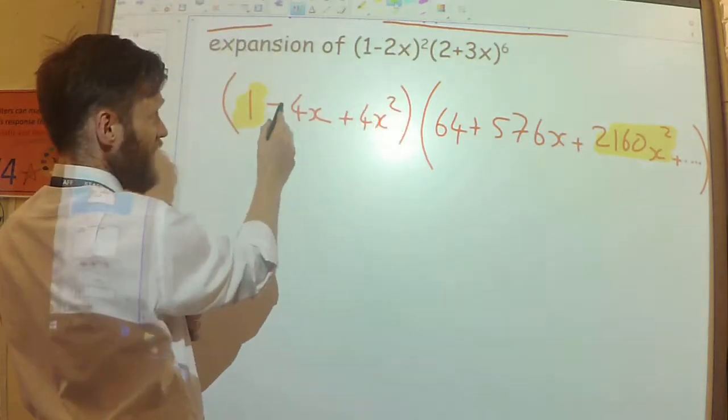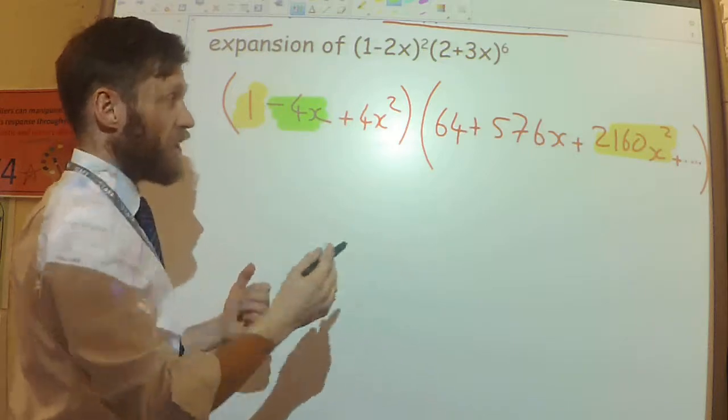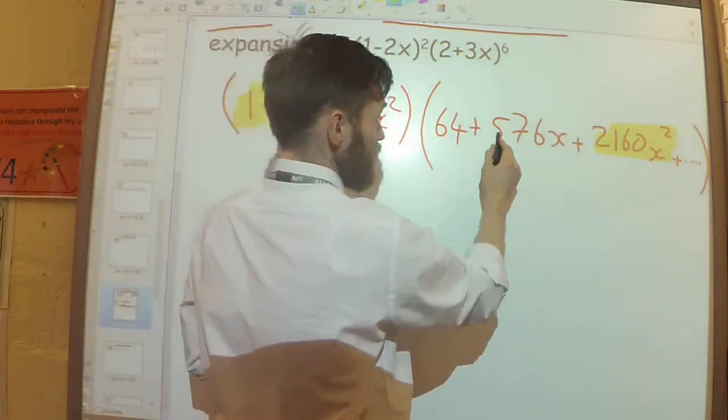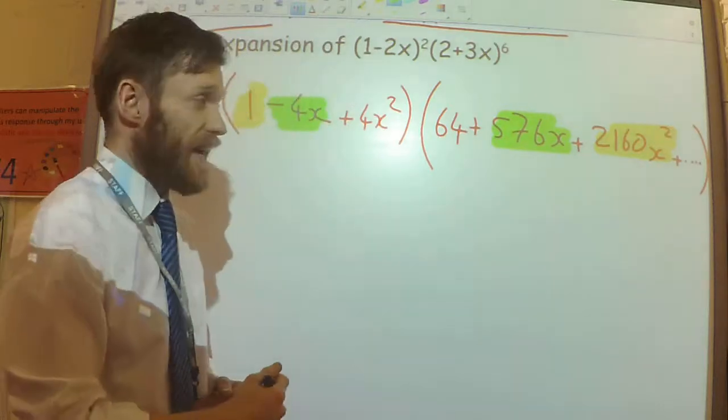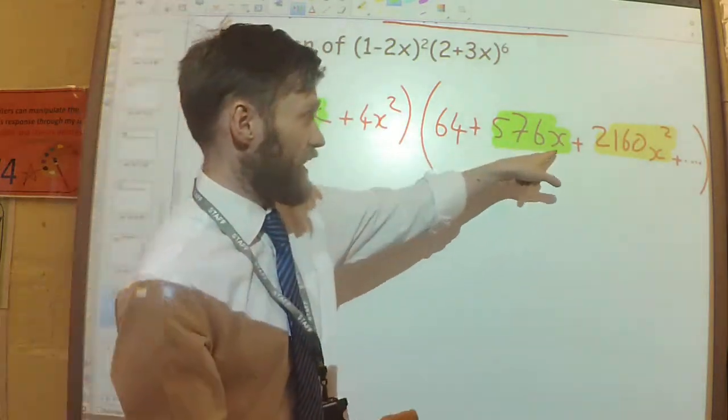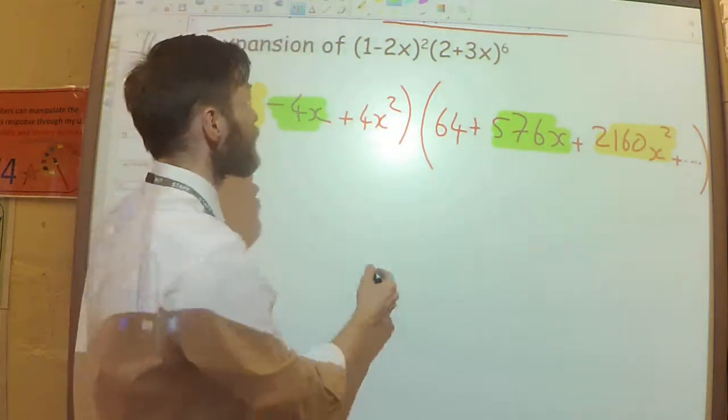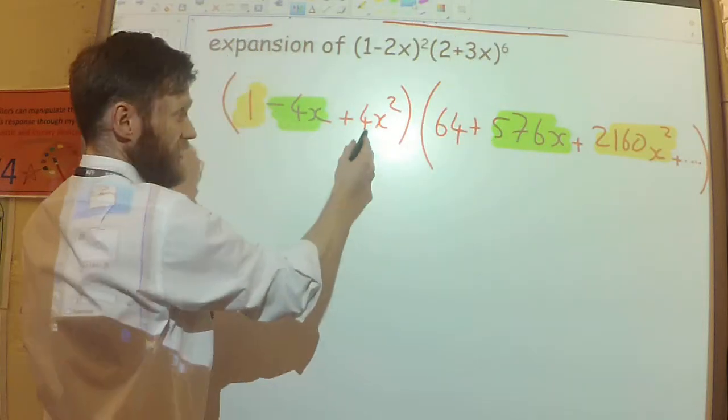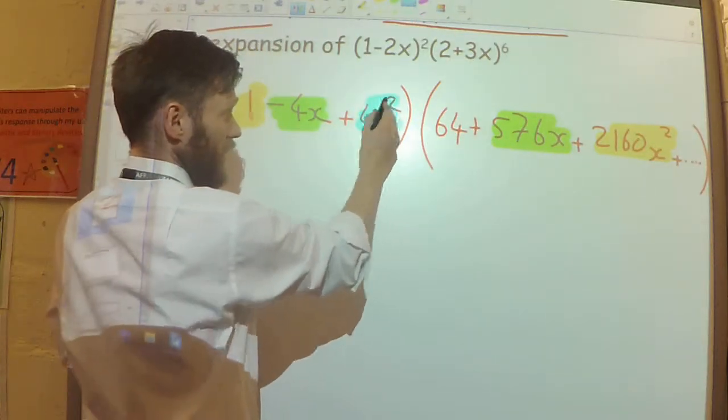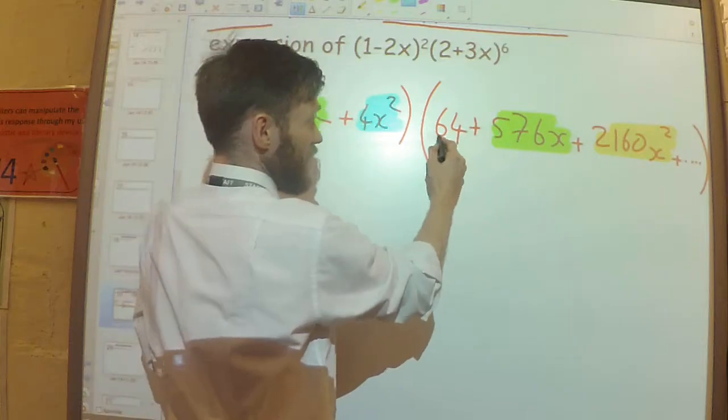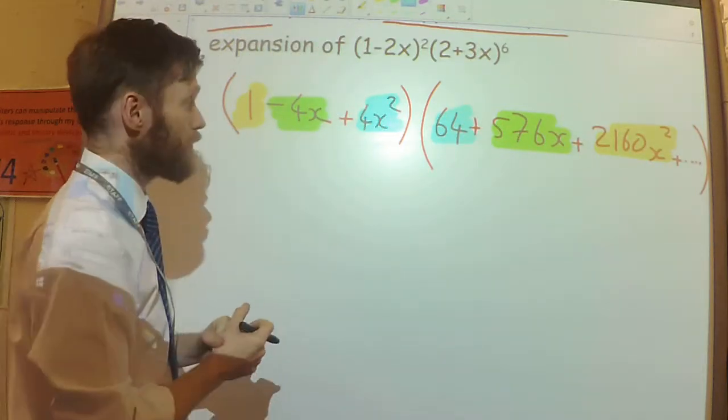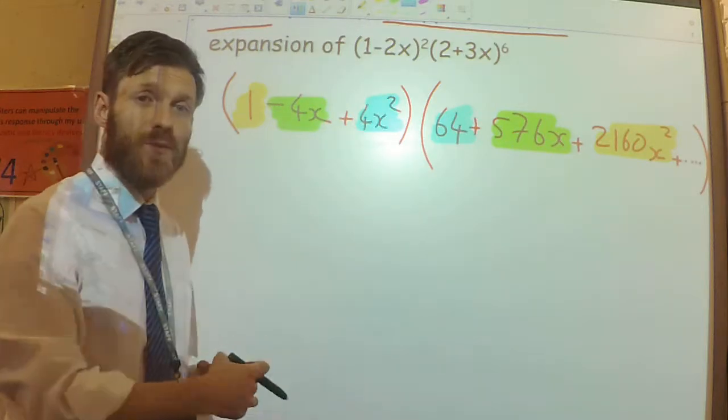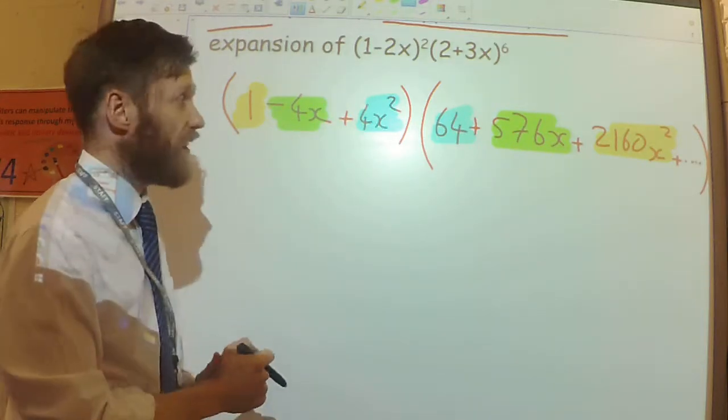The minus 4x, if I times that by the 576x, that would give me an x squared term because the x times the x would give me an x squared. And then, the 4x squared multiplied by the 64 would also give me an x squared term. Those are all the different ways that I can get an x squared term.